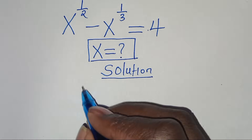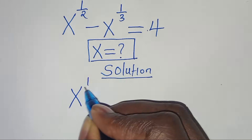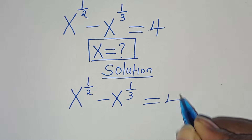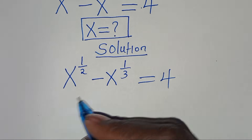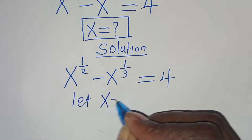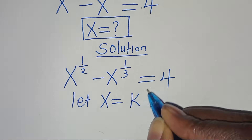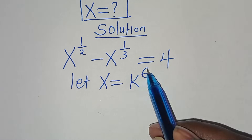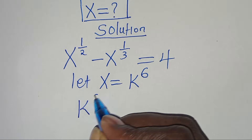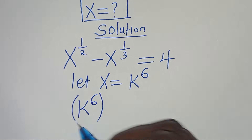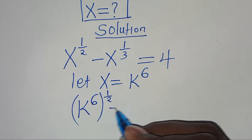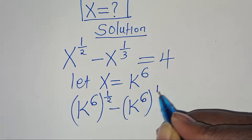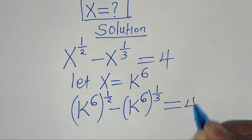So this implies that from here, we have x to the power of a half subtract x to the power of 1 over 3, and this is equal to 4. The first step to do here, we can let x be equal to k to the power of 6. Now let's substitute x with k to the power of 6, so that we have k to the power of 6, raised to the power of a half, then subtract k to the power of 6, raised to the power of 1 over 3. This is equal to 4.